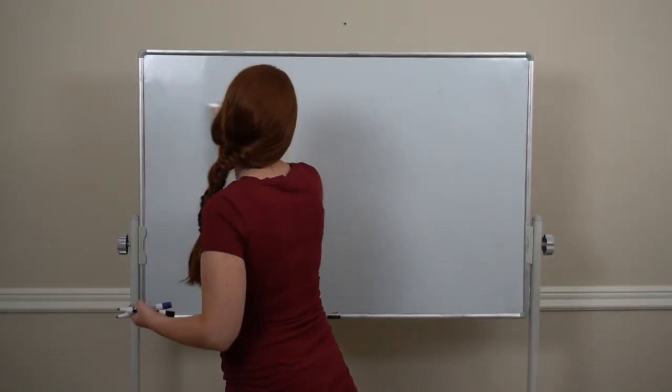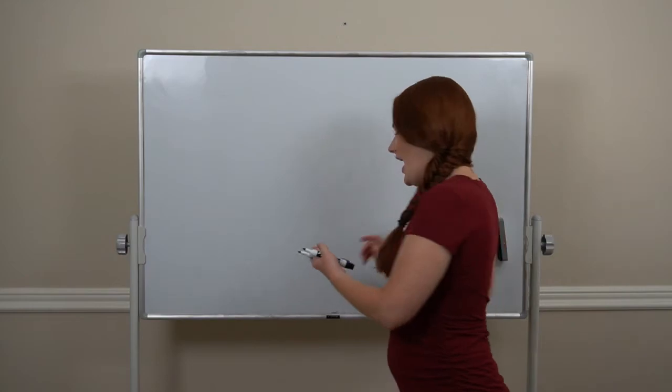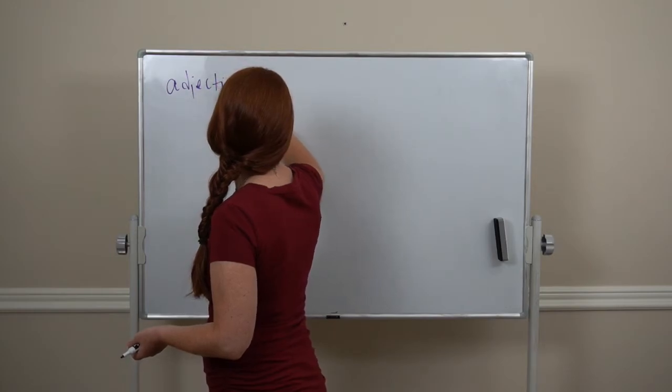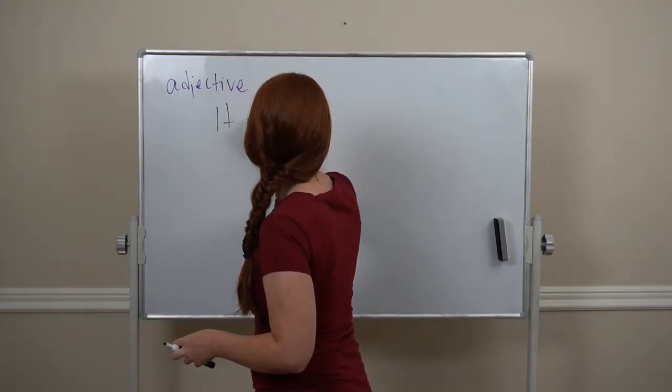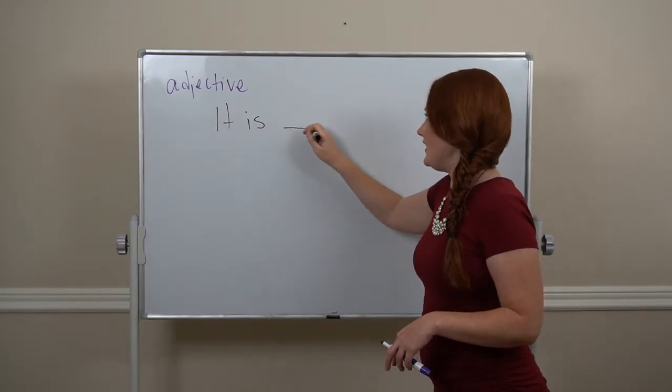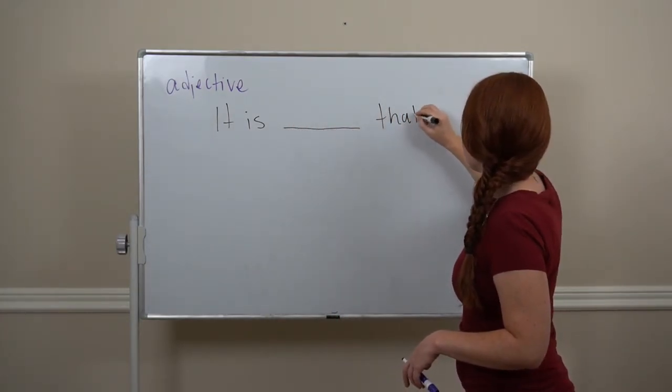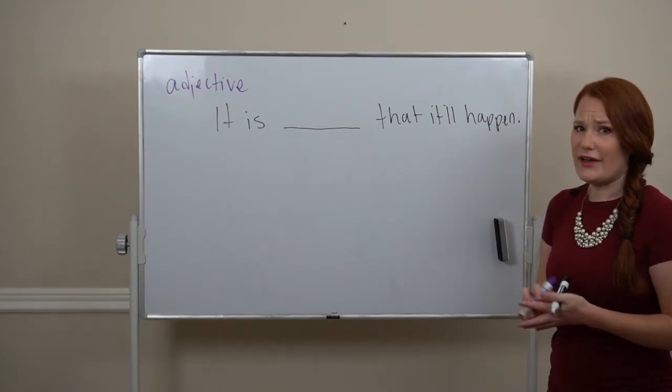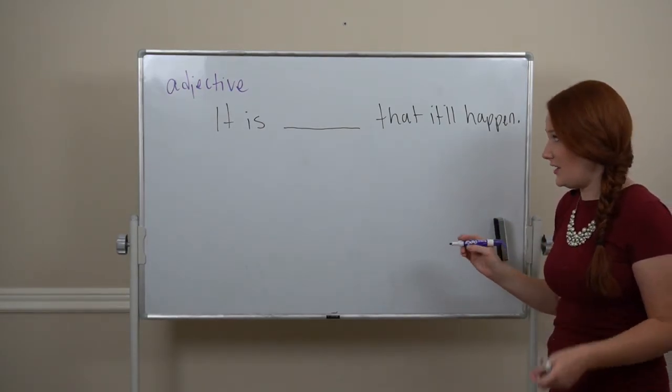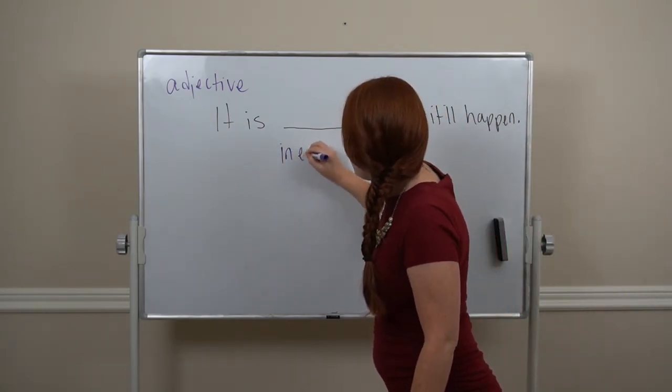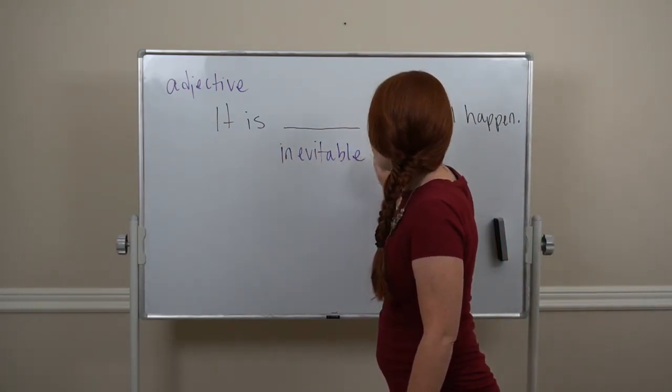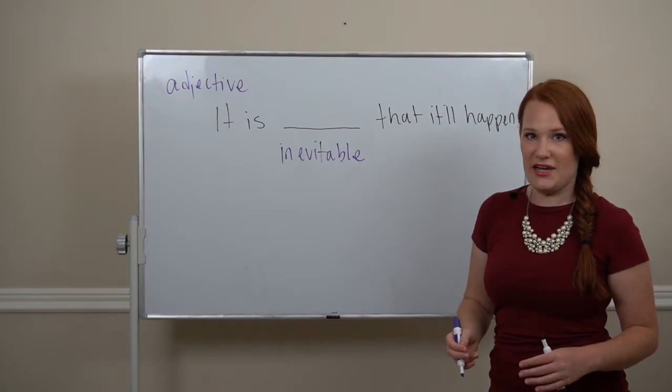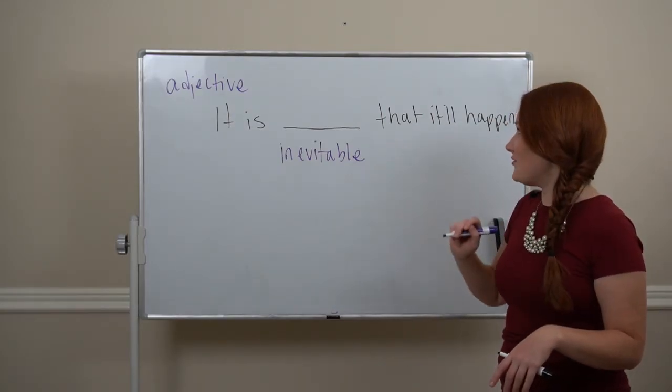All right, let's talk about some other adjectives. Instead of I as the subject, we'll have it as the subject. It is blank that it'll happen. So we've got a whole bunch of different adjectives that can go in here. I can say inevitable. This is a really nice adjective. It means nothing can stop it from happening. It has to happen. It's inevitable that it'll happen.